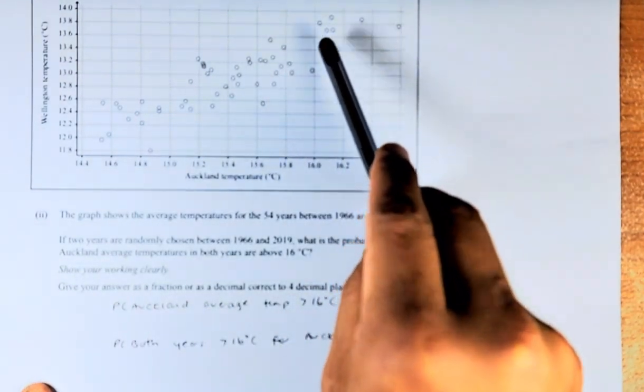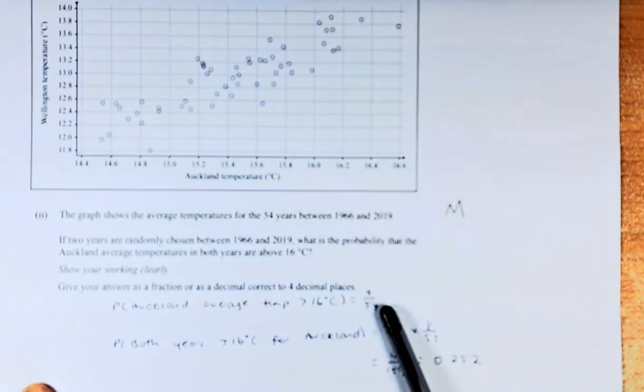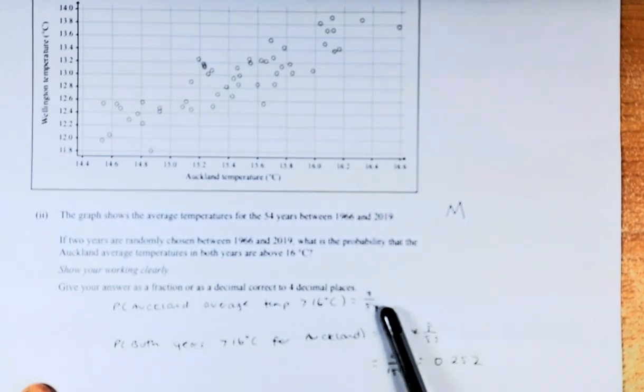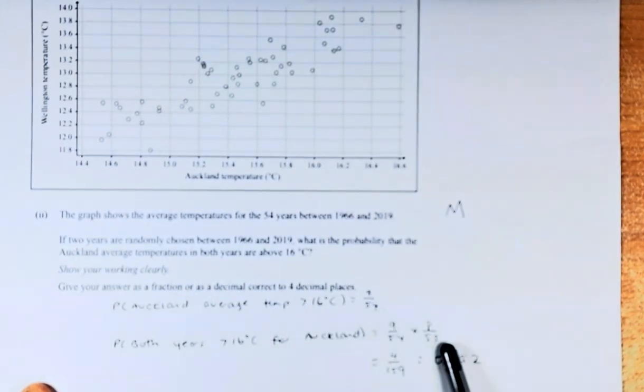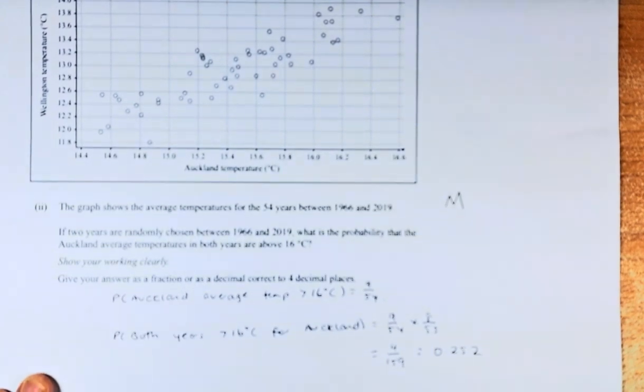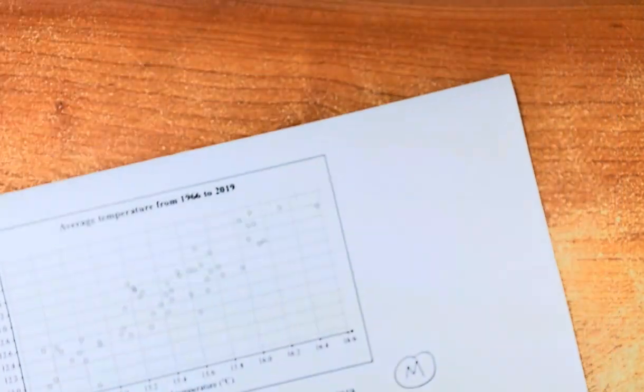So you count there, 2, 4, 6, 8, 9. So the chances of Auckland above 16 is 9 out of 54. But if the question asks you for 2 years, when it's above 16 degrees, so if the first year is 9 over 54, the second year will be 1 number less, so it will be 8 over 53. So you multiply the 2 numbers, 9 over 54 times 8 over 53, and the answer is 4 over 159, and the answer is 0.252. You can get the merit for that question, okay? Great.